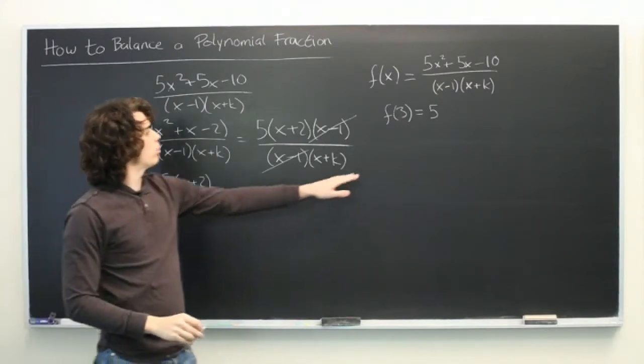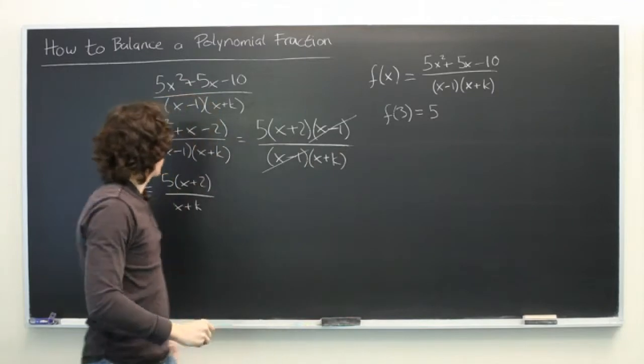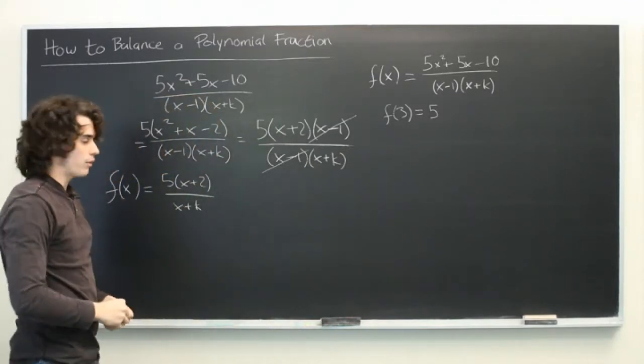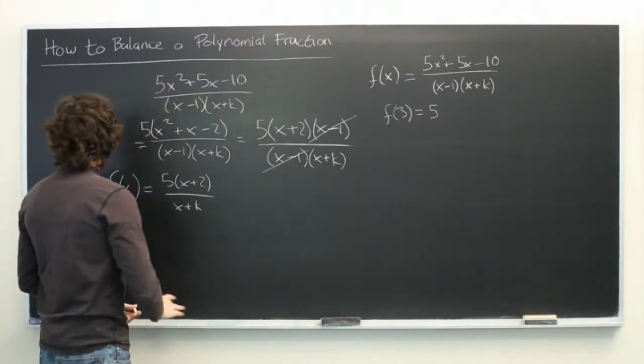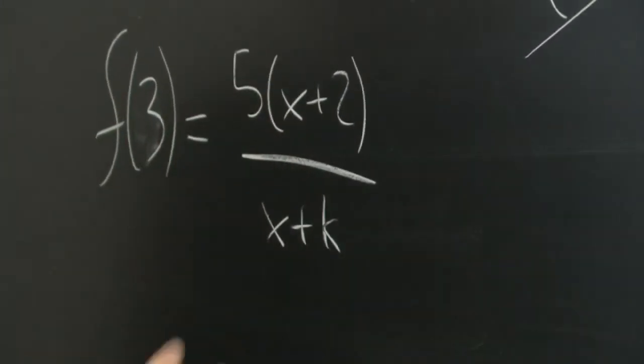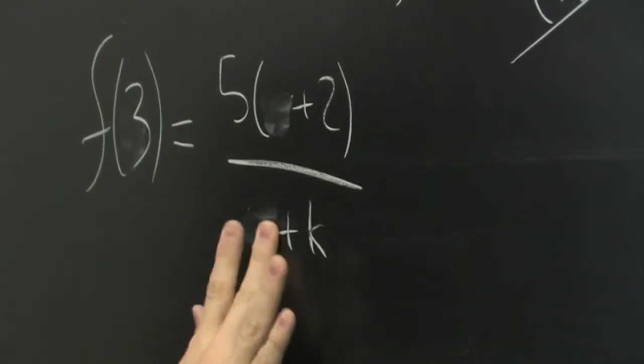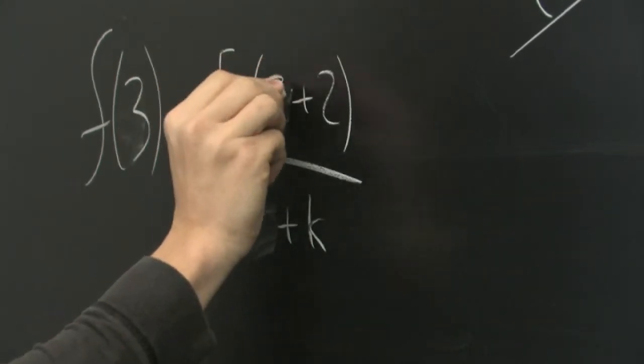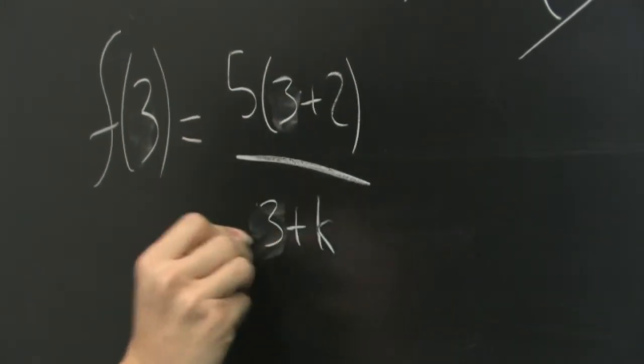So let's go ahead and plug in f(3). We'll set that equal to 5 and see if we can solve for k. So f(3) is equal to 5 times (3 plus 2) over (3 plus k).